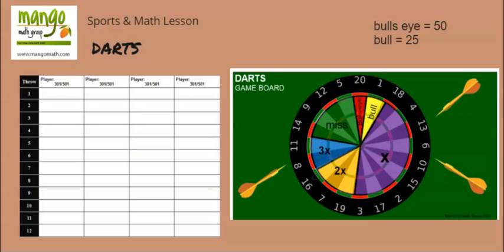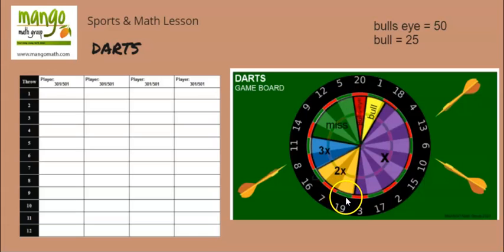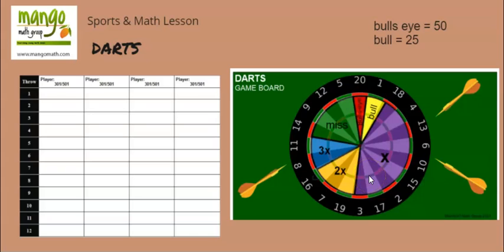When playing darts, a player goes up and throws three darts at a dartboard, which has different values. The ring outside tells you the number value, and each section is divided by a color so you can tell which number you've landed on. There are also other rings that tell you if it's a double or triple score. We are using a spinner, so you have options for triple score, times three, times two, or just the number itself.